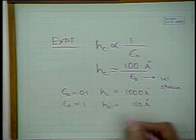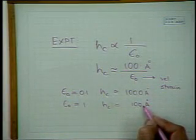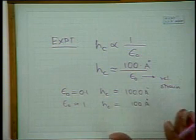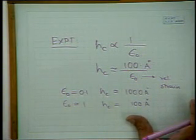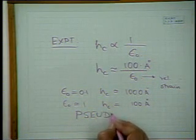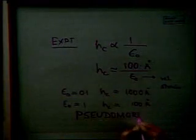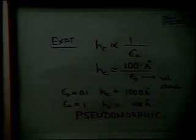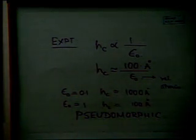You can grow a whole series of layers which are strained — not relaxed — and these go under the name pseudomorphic: the epilayer is conforming to the same morphology as the substrate.